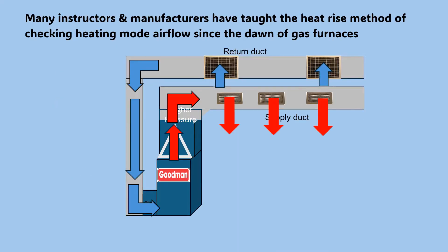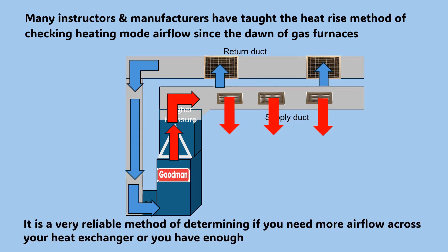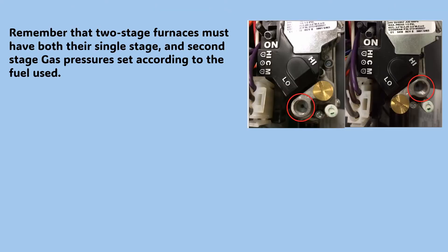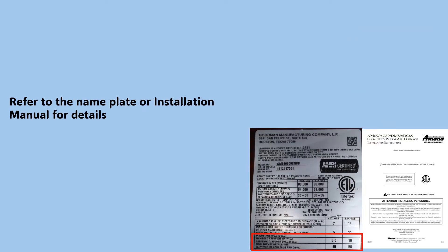Many instructors and manufacturers have taught the heat rise method of checking heating mode airflow since the dawn of gas furnaces. It is a very reliable method of determining if you need more airflow across your heat exchanger or you have enough. Your filter must be clean and your gas pressure set correctly. Remember, the two-stage furnace must have both its single-stage and second-stage gas pressures set according to the fuel used. Refer to the nameplate or installation manual for details.